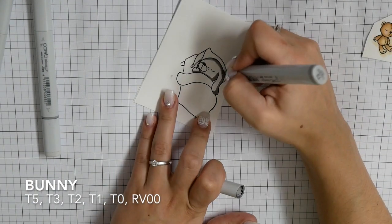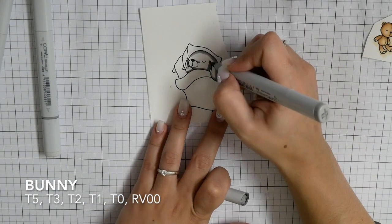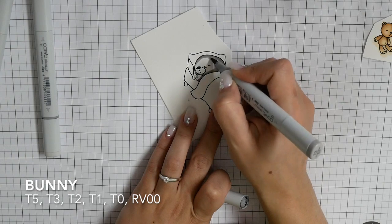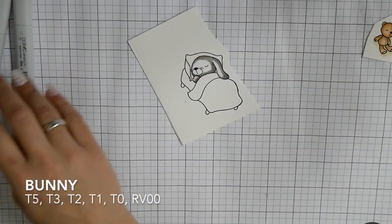For the bunny I am using T5, T3, T2, T1, T0, and also for the cheeks RV00.